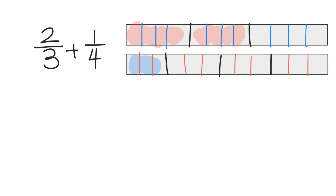Now the neat thing is these two-thirds are no longer two-thirds — counting all the pieces, it's now eight out of twelve. Eight out of twelve.